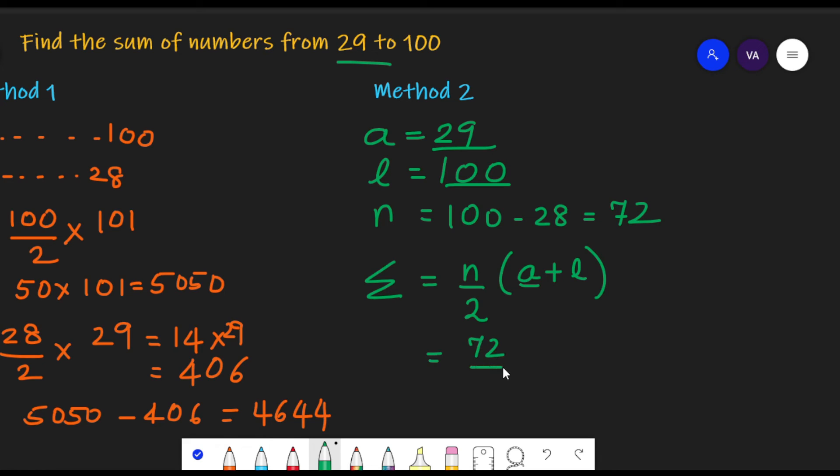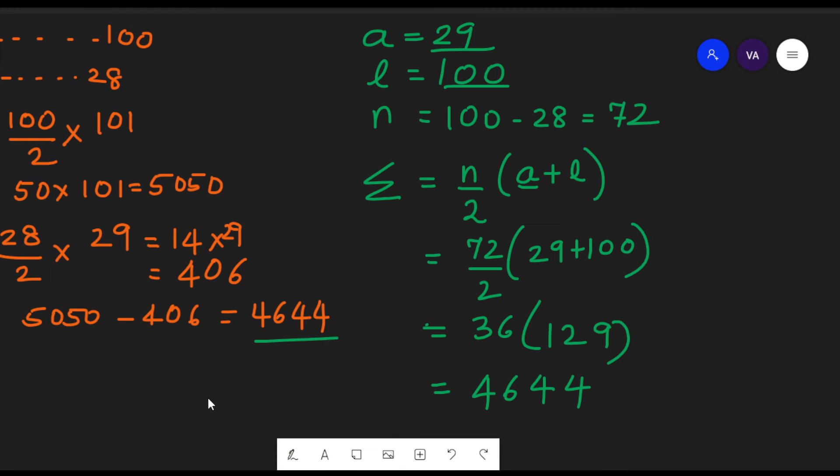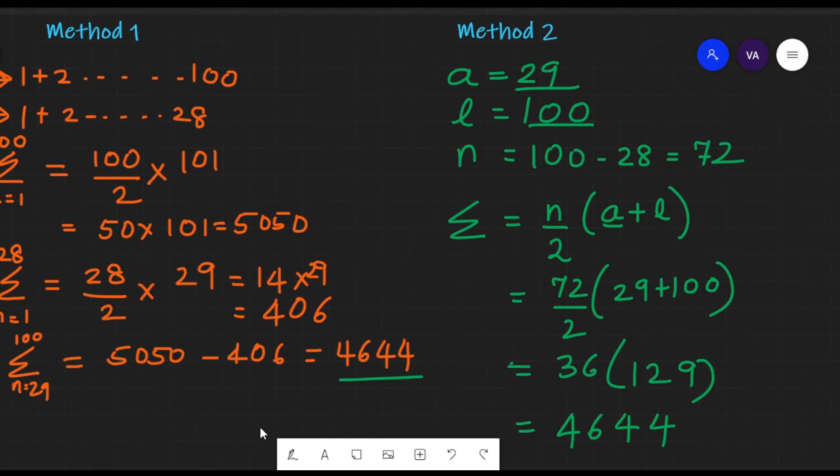So we have n by 2 is 72 by 2, and 29 plus 100 is a plus l. So we have 36 into 129. You will see, if you work out this product, it will again work out to be 4644. Yes, it matches with method 1. So whichever method you like, you can use to find the sum of numbers which are not starting from 1.